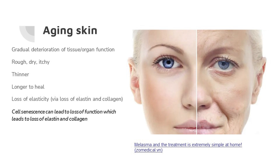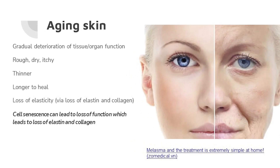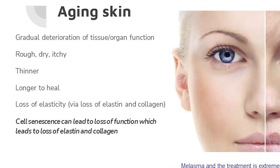Aging skin is a gradual deterioration of organ function. Signs are rough, dry, itchy, thinner skin that takes longer to heal. A big one is the loss of elasticity via loss of elastin and collagen. Cell senescence can lead to loss of function, which leads to loss of elastin and collagen — we'll have visuals to show that. Senescent cells in the skin can accelerate dysfunction in other body systems as well.